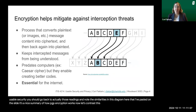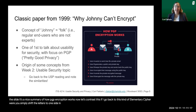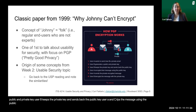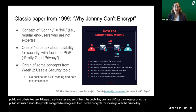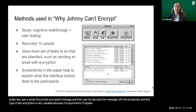In contrast to an elementary cipher where you simply shift letters to one side, in PGP, User A wants to send User B an email. User B generates a public and private key, keeps the private key, and sends back the public key. User A encrypts the message using the public key and sends the encrypted message. Then User B decrypts the message with the private key. This type of key encryption is very valuable because it is asymmetric.